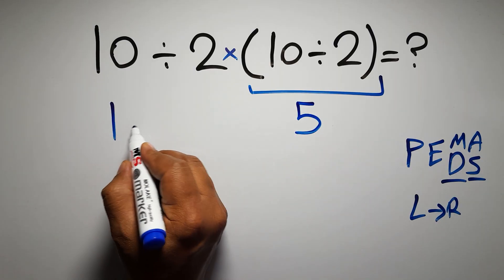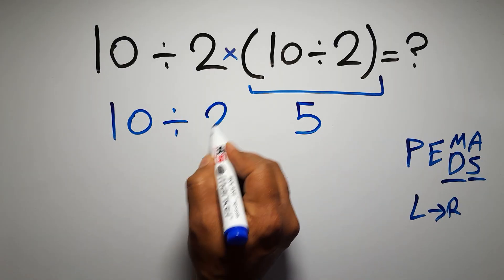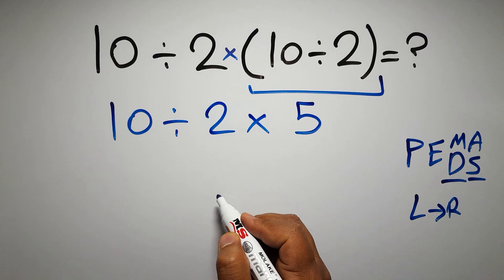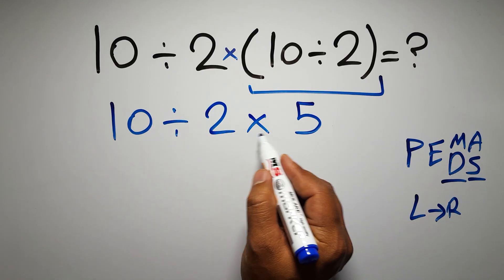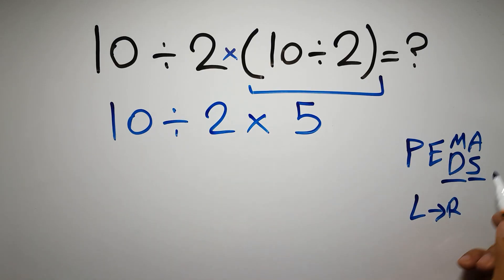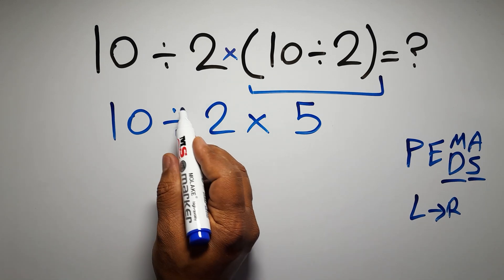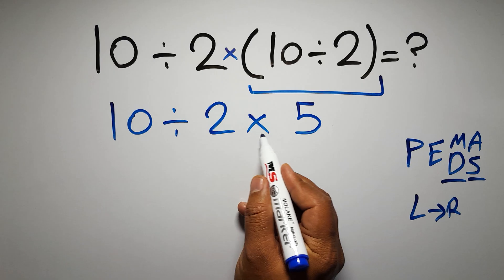So we have 10 divided by 2 times 5. Now we have one division and one multiplication. As I said, multiplication and division have equal priority, and we have to work from left to right, so here first we have to do this division, then this multiplication.